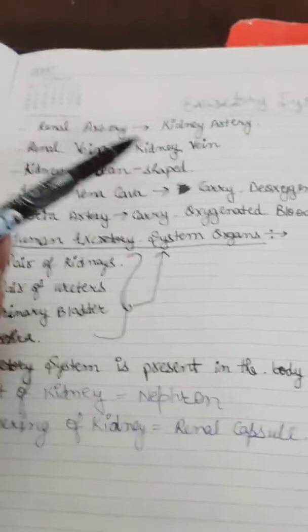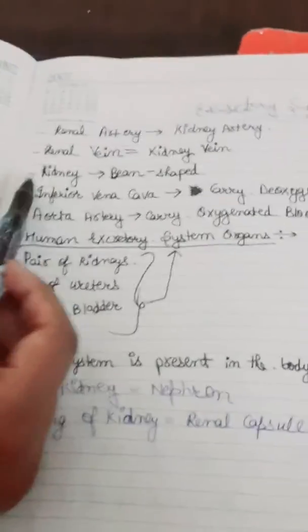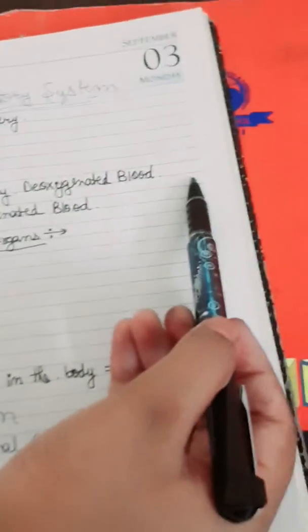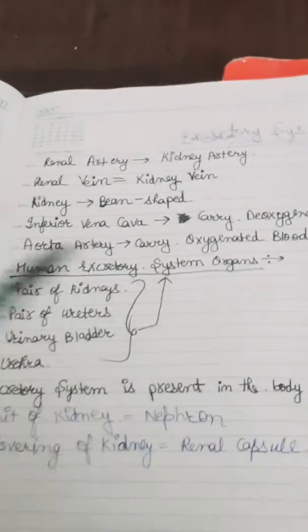Let's review the important points: the renal artery is also known as kidney artery; the renal vein is also known as kidney vein; the shape of the kidney is bean-shaped; the inferior vena cava carries deoxygenated blood from kidney to heart; the aorta artery carries oxygenated blood from heart to kidney; and there is a pair of kidneys present in the human excretory system.